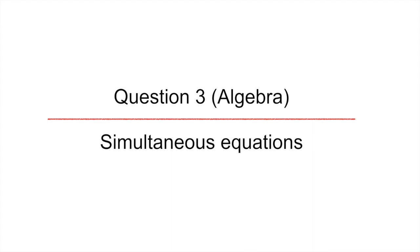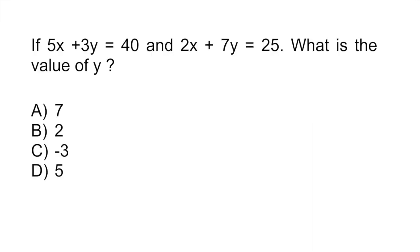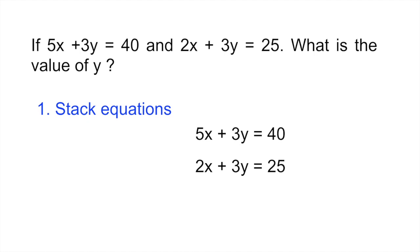Question three is an algebra problem looking at simultaneous equations. It tells you if 5x plus 3y is equal to 40 and 2x plus 7y is equal to 25, what is the value of y? Here what you have to do, we're going to use something which is called the linear combination method. The first thing you do is you stack your equations like that.